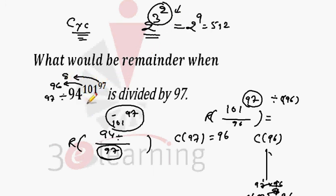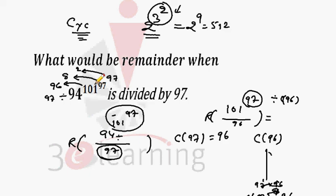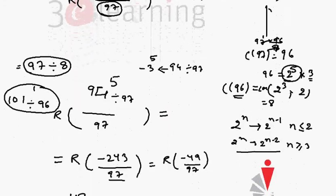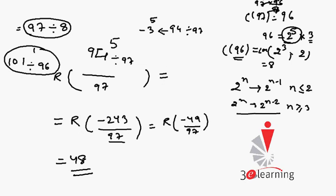To summarize: divide the base by 97 (the divisor), then the upper power by the cyclicity of 97 (which is 96), then by the cyclicity of 96 (which is 8), replacing remainders as you go from top to bottom. Note we are working with co-primes — 97 and 94 are co-primes. The use of cyclicity reduces the power, and then you can apply further methods. The final answer is 48.